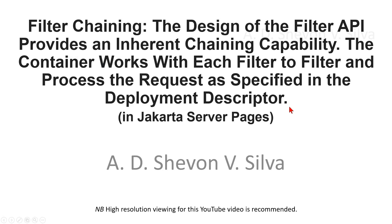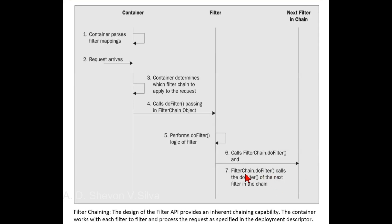Filter chaining. The design of the filter API provides an inherent chaining capability. The container works with each filter to filter and process the request as specified in the deployment descriptor in Jakarta Server Pages. The compatibility with filter chaining is an integral requirement of every filter. Filter chaining is provided by the series of interactions between the container and the filter.